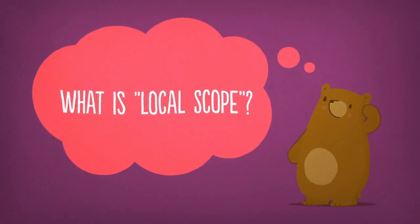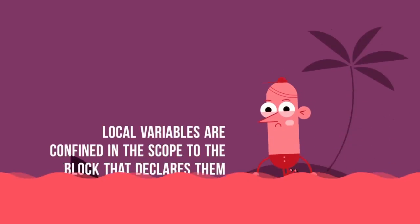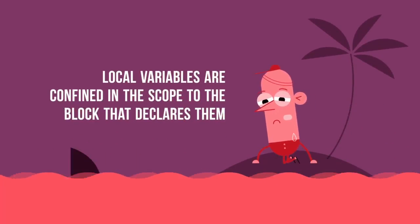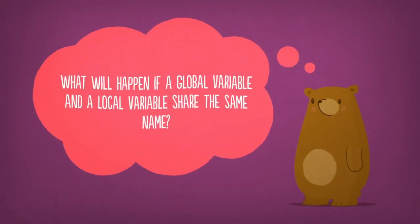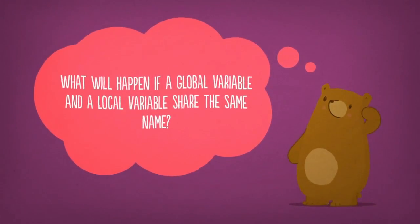Why exactly is local variable? Local variables are confined in the scope to the block of code that declares them. So what will happen when we have a global variable and a local variable that share the same name?